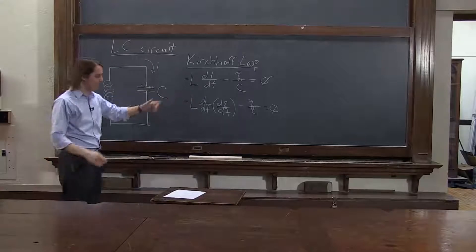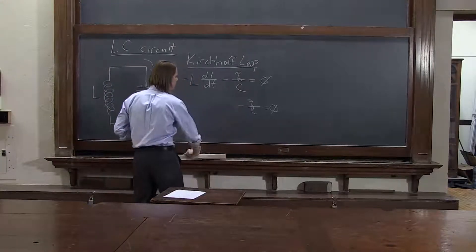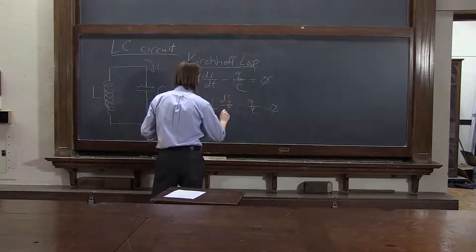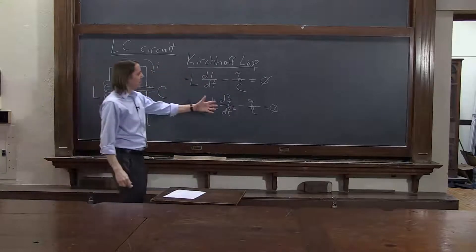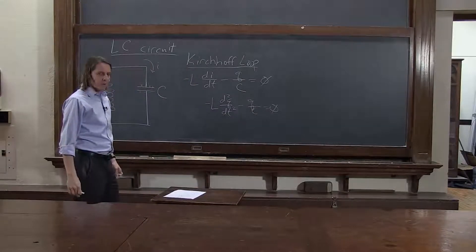And that is a second derivative. I'll go ahead and save myself a little space. This is minus L d2q dt2. So minus L times the second derivative minus q over C equals zero.